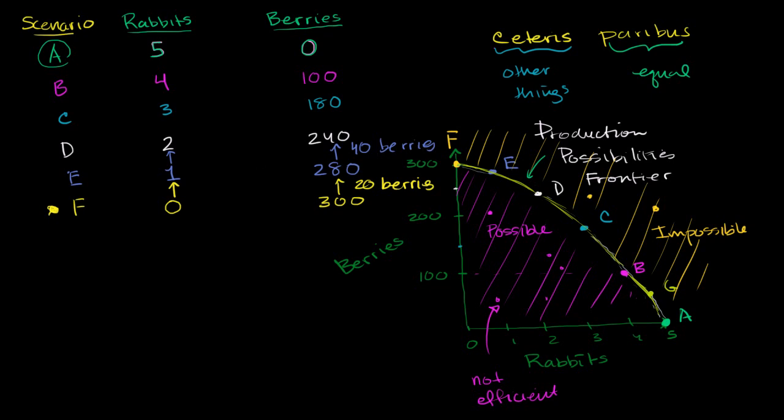Now, let's say we're in Scenario D, and we want even more rabbits. We're really starting to become carnivores now. What am I going to give up? Well, I'm going to give up 60 berries.